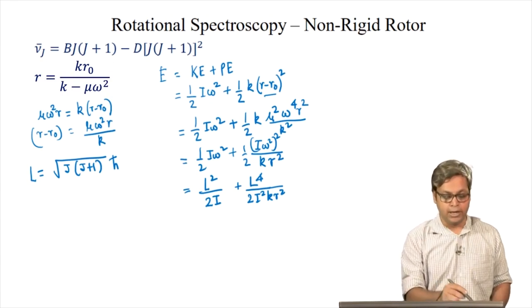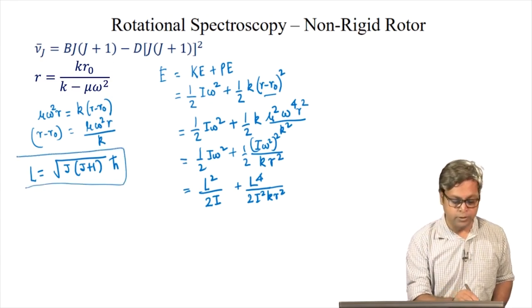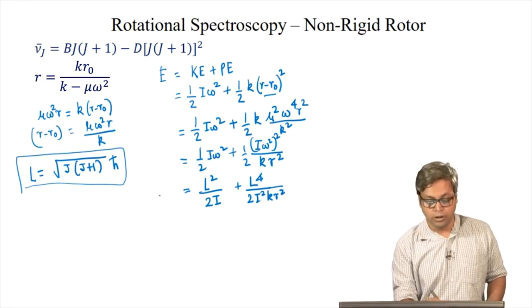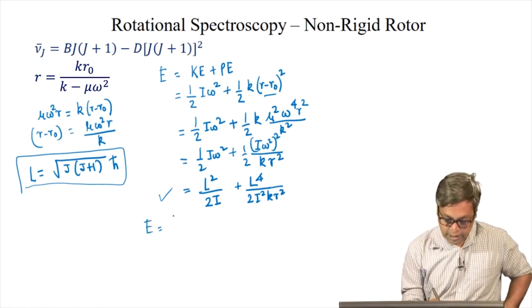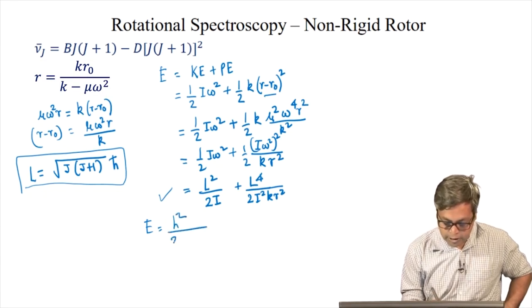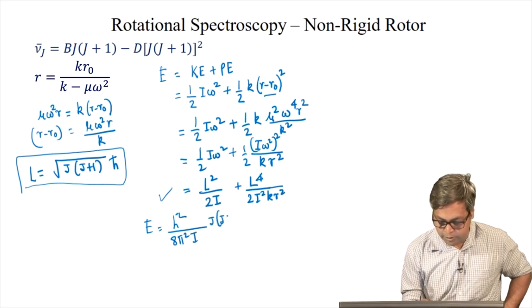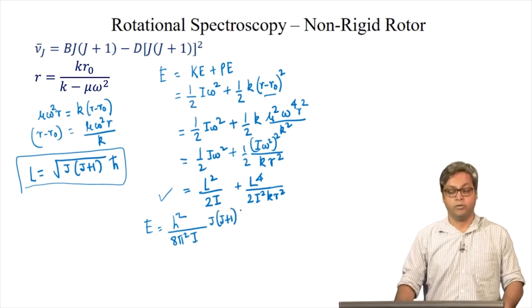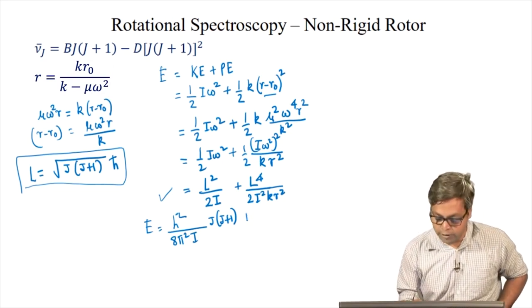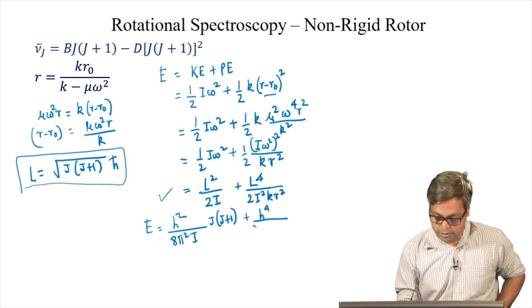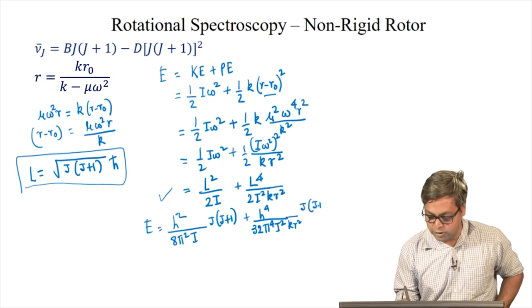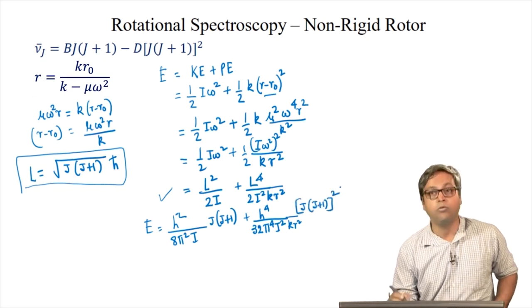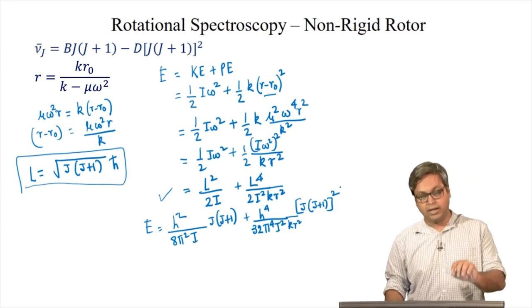Replacing L = √[J(J+1)]·ℏ into the expression, we can write E = h²/8π²I · J(J+1) — which we know from the previous lecture — plus h⁴/(32π⁴I²kr²) · [J(J+1)]². This energy is in joules.